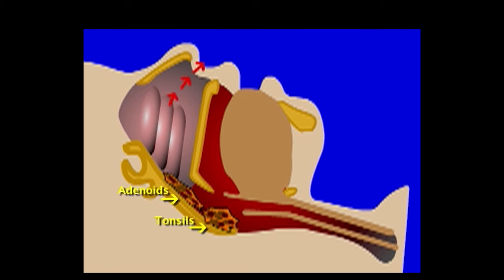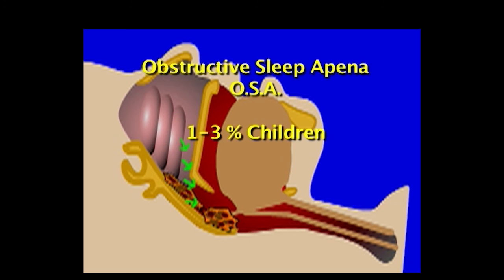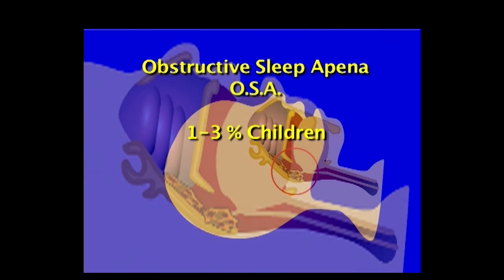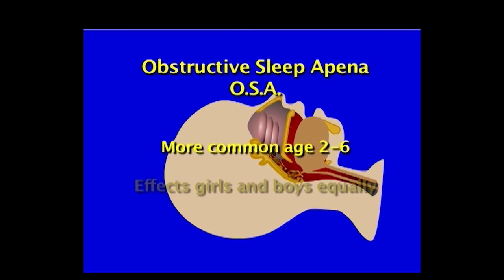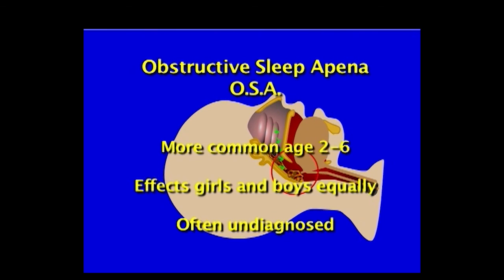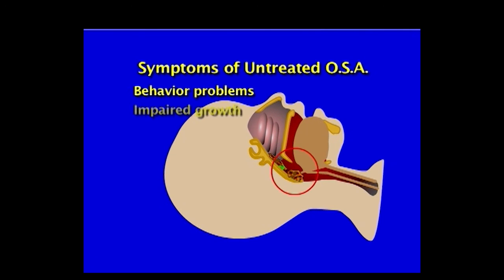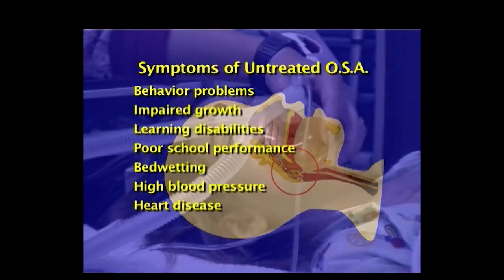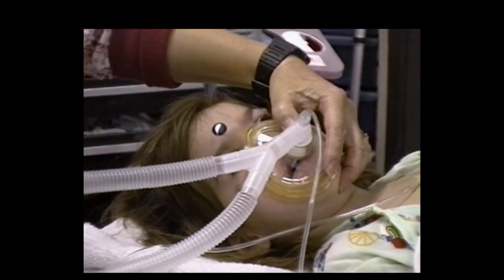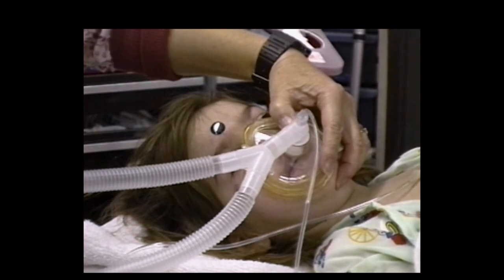The nasal passages of older children are often filled with adenoidal tissue. Hypertrophied adenoids and tonsils can fill the dead space in the back of the pharynx, making assisted ventilation more difficult. It is currently estimated that 1 to 3 percent of children suffer from obstructive sleep apnea, or OSA, a condition more often thought of as an adult disorder. OSA is now the most common reason tonsils and adenoids are removed in children. Pediatric sleep apnea typically appears between the ages of 2 to 6, but it can occur from infancy to adolescence. It is believed to affect girls and boys equally, and it is often undiagnosed. Untreated obstructive sleep apnea in children has been linked to behavior problems, impaired growth, learning disabilities, poor school performance, bed wetting, high blood pressure, and heart disease. Airway management can be more challenging when such a child loses consciousness or develops airway obstruction from other causes.